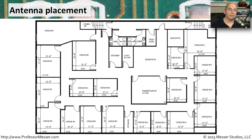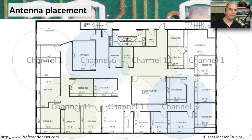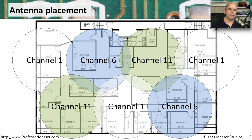In a very large environment, you may need to deploy multiple access points. You may need to set different signal strengths depending on where each access point is located. If you're evenly distributing access points across an entire floor, you may be able to set them all to the same signal strength. But if access points are in different locations, you might want to set some to higher power and others to lower power.